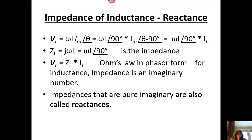If we want to determine the impedance, remember Ohm's law — V equals IR — we know that for complex numbers, V equals I times Z. Z is the impedance, that complex value that includes the resistance plus the reactance. For an inductor, all we have is reactance; everything is imaginary. Here we have the definition of the reactance: J omega L. We can solve for that using V divided by I to get the value of Z — again, Ohm's law.